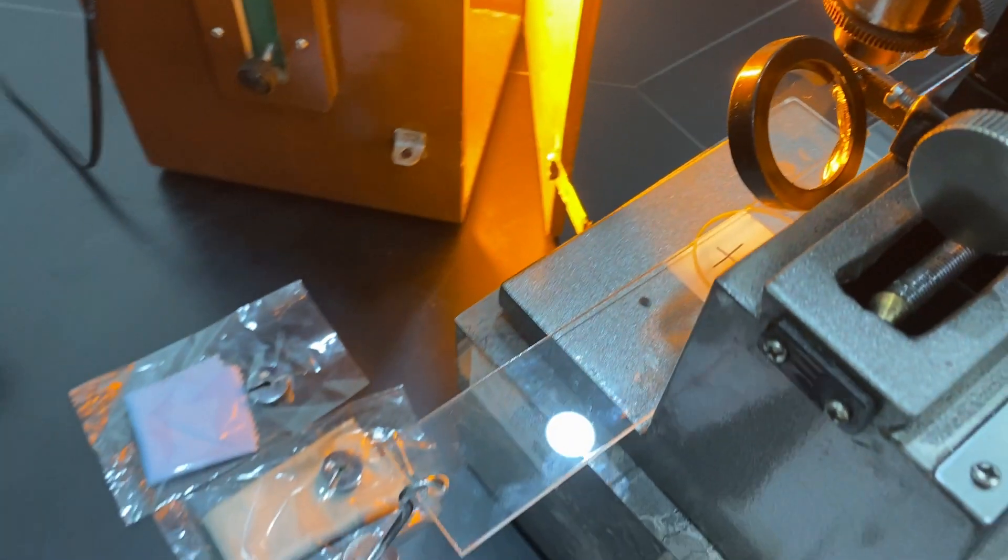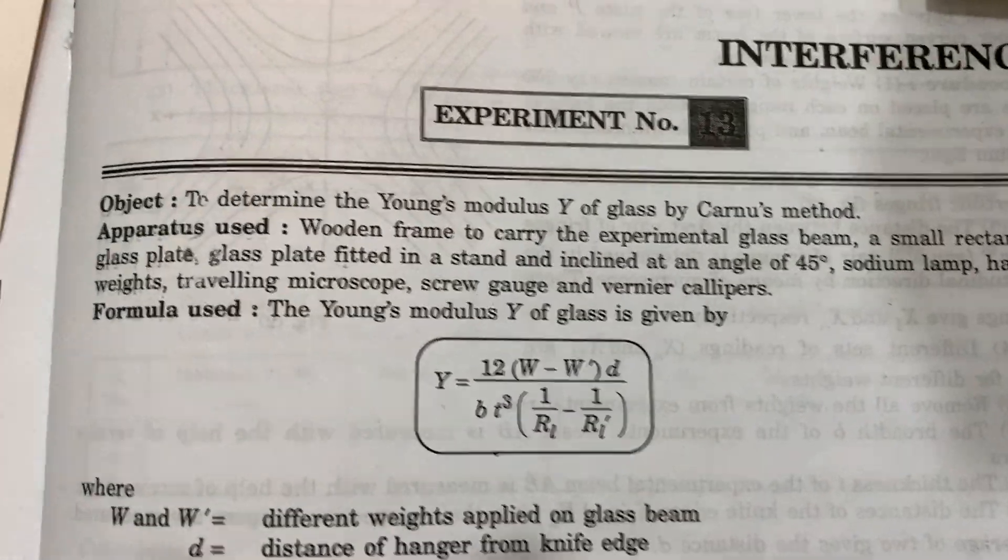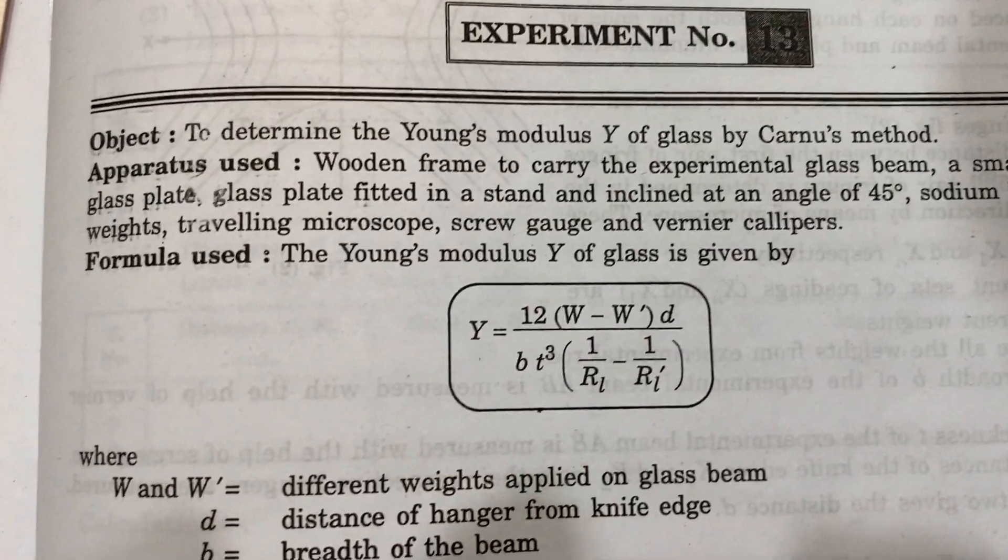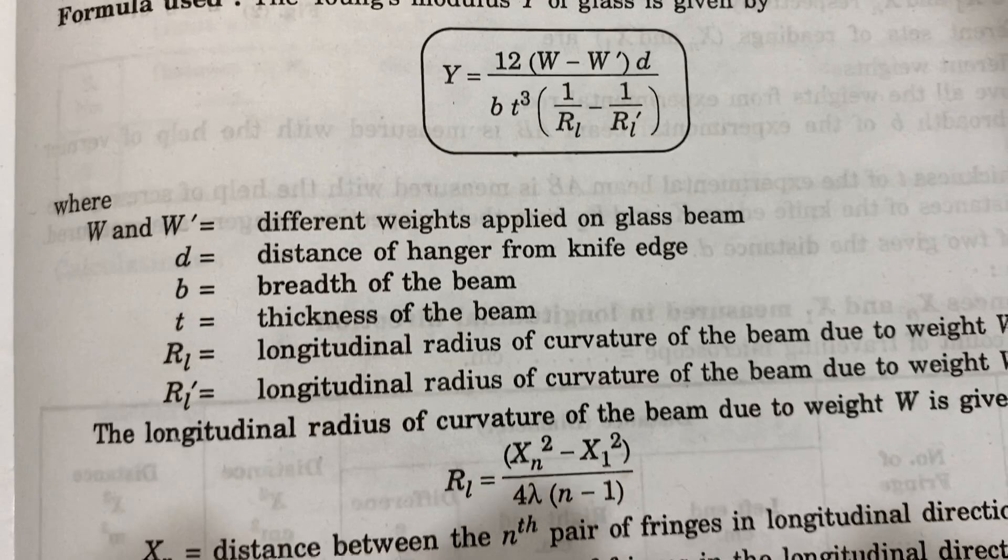Now I can show you these fringes. By Cornu's method, the formula uses different symbols and denominations in this setup.